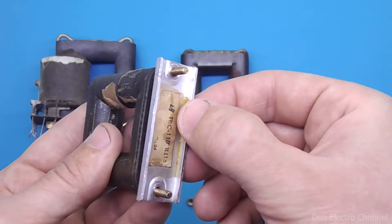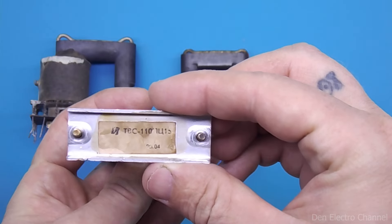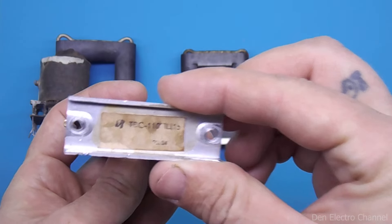Then the aluminum plate is removed. By the way, there is usually a sticker on it with the transformer marking written on it.